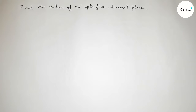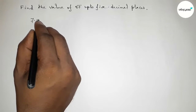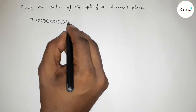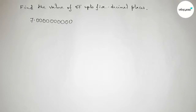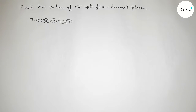First of all, write here the number 7, then take a point beside 7. For up to 5 decimal places, we have to take 10 zeros after the point. Write down 10 zeros and make them into pairs — taking 2 zeros as a pair, so we get 5 pairs.